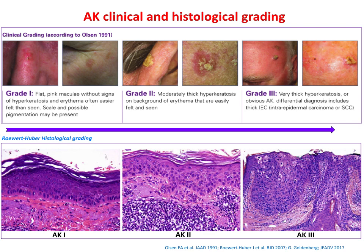Histologically, AKs are classified based on keratinocyte atypia extending to the basal and suprabasal layers of the epidermis, as observed in AK1, up to the full thickness of the epidermis, as seen in AK3.